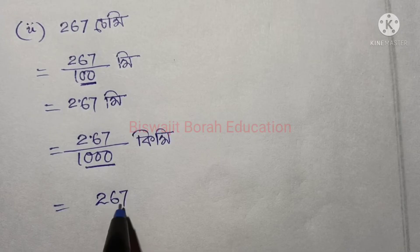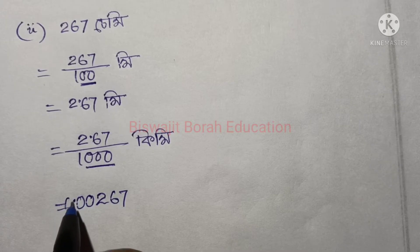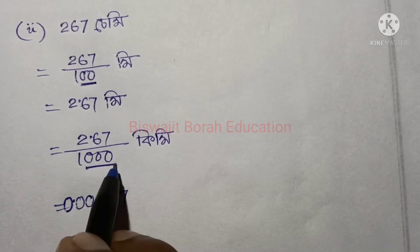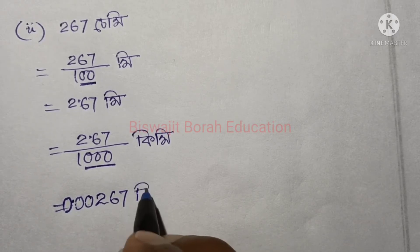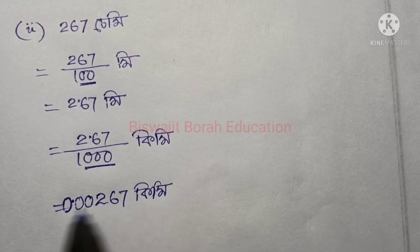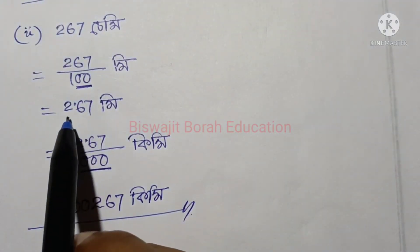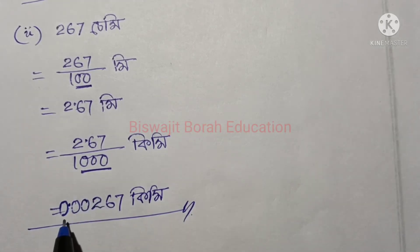So 267 is equal to 0. So 1, 2, 3 is equal to 0. We have 6 equal to 0. This gives us 0.00267. So 267 cm = 2.67 meters = 0.00267 kilometers.